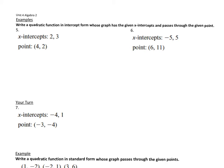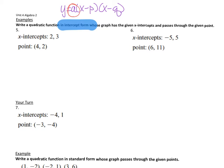When it says write a quadratic function in intercept form, we know intercept form: instead of vertex form, it's going to be y equals a times x minus p times x minus q. Our p and q are our intercepts, and again we're trying to find a — that is our main goal.